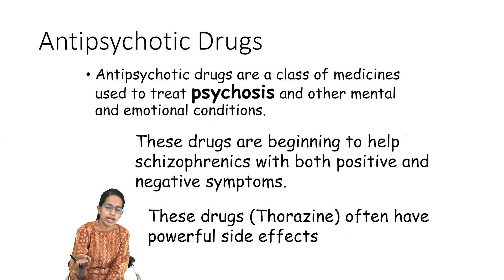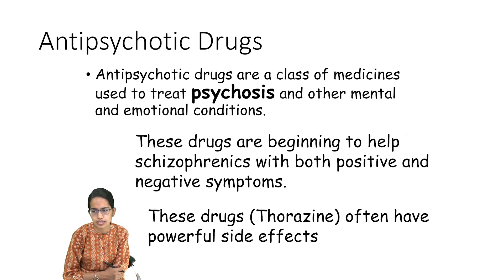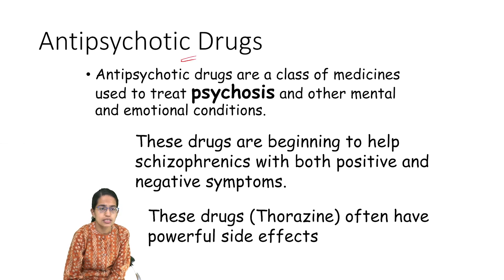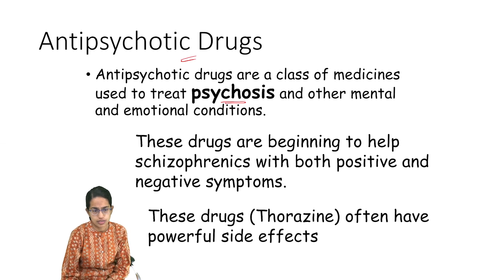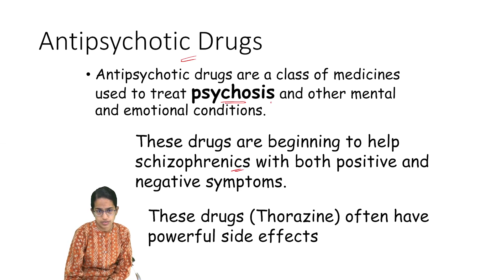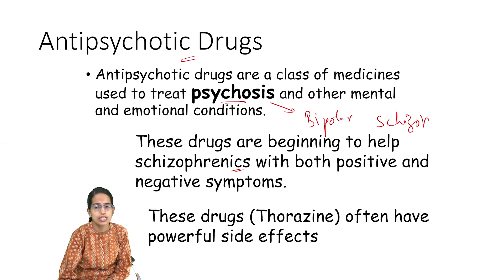According to this, there are three categories of drugs: antipsychotic, anti-anxiety, and antidepressant. We also have drugs for mood disorders and bipolar disease, but these are the broad classifications. Antipsychotic drugs, as the name suggests, are used to treat patients with psychosis. They are also used to treat schizophrenic patients, as psychosis predominantly includes bipolar disorders and schizophrenia.